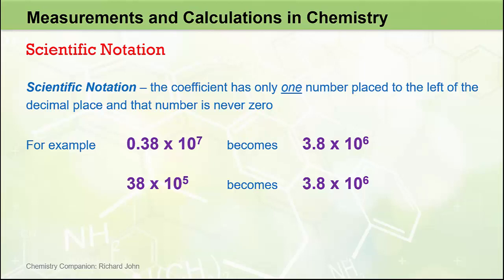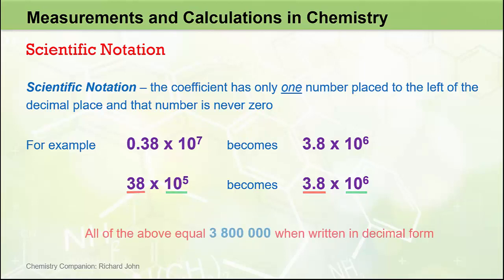So 3.8 more correctly represents that coefficient. We decreased the coefficient by a factor of 10, and so we had to increase the exponential part by a factor of 10. It's worth noting that all these numbers are equal to 3,800,000 when written in decimal form.